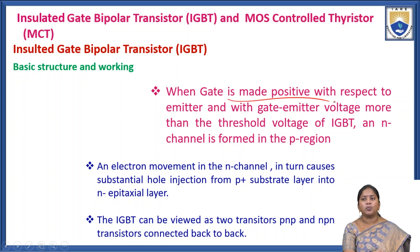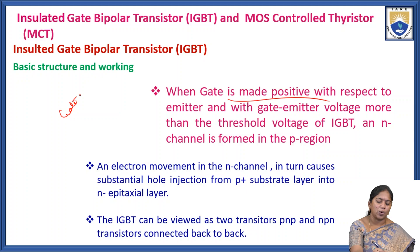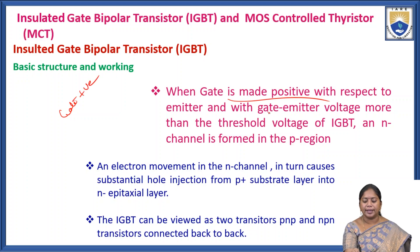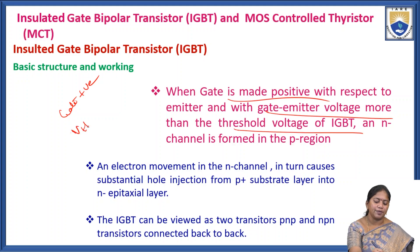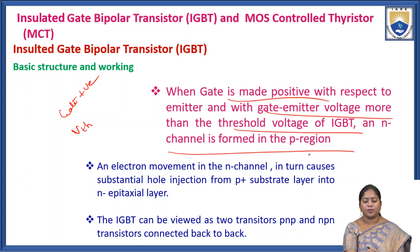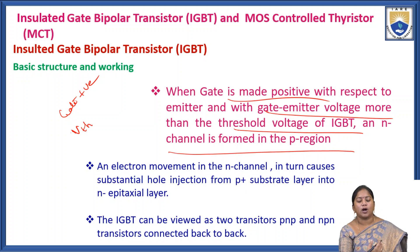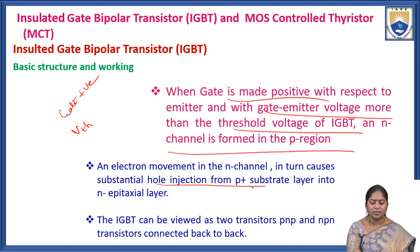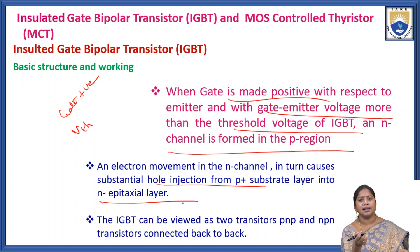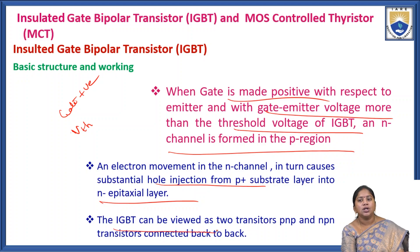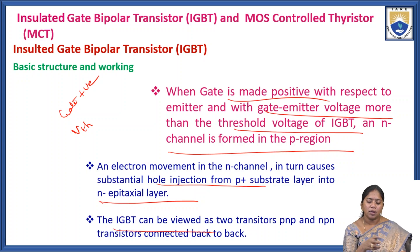When the gate is made positive with respect to the emitter, and the gate-emitter voltage exceeds the threshold voltage VTH of the IGBT, an N channel is formed in the P region. Electron movement in the N channel in turn causes substantial hole injection from the P+ substrate layer into the N-type epitaxial layer.